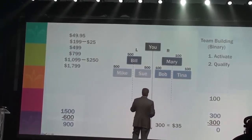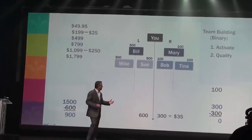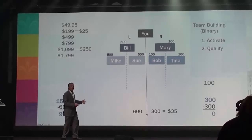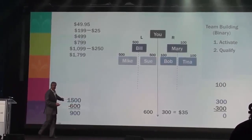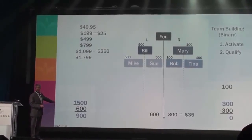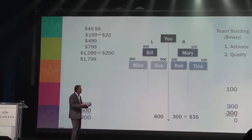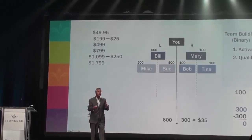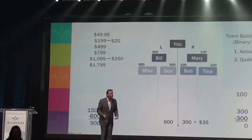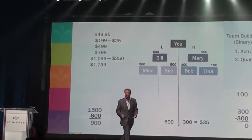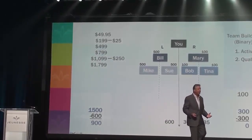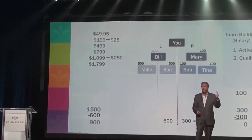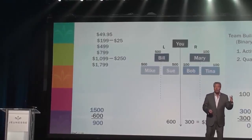You made $35. When your right team generates another 300 points, you get another $35, because you have 900 points left over on the left side. As long as you remain active in our plan, you get to keep your points. The computer tracks points to infinity — there are no cutoffs, no blockages, no gotchas. New order points, back office orders, autoship points — it all counts.